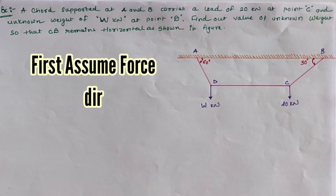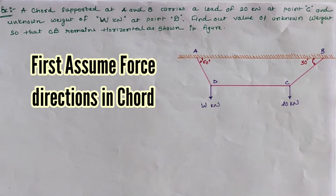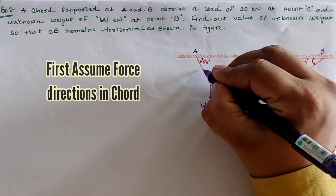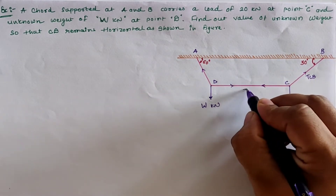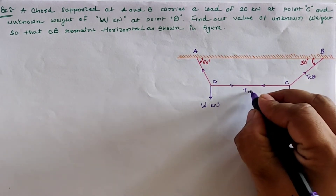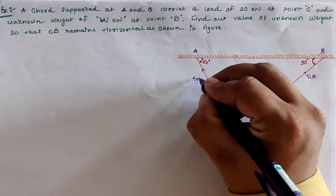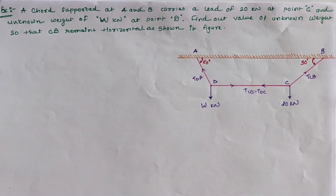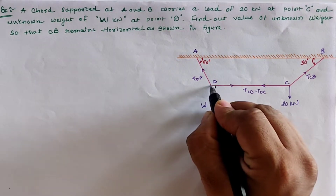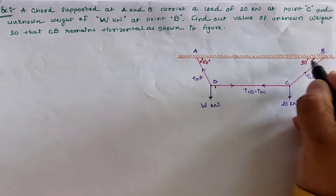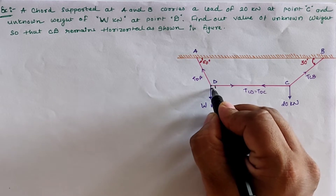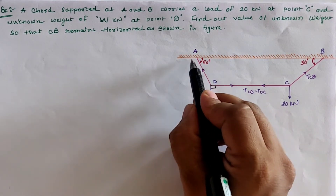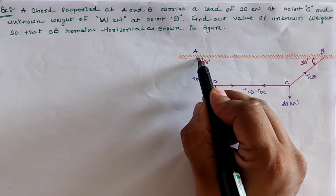First, we have to consider the tension generated in this cord system. Let us assume that the tension generated is as shown in the figure. Now we must also determine the angles between these forces. At location D, we know that DC is parallel to the PA line, and the downward load makes an angle of 90 degrees. Observing the figure, if 60 degrees is the angle with T at D...